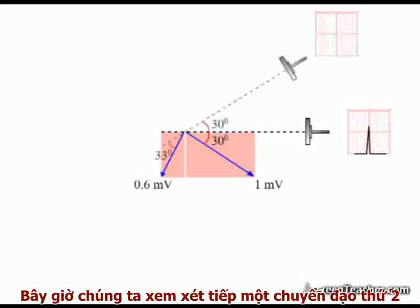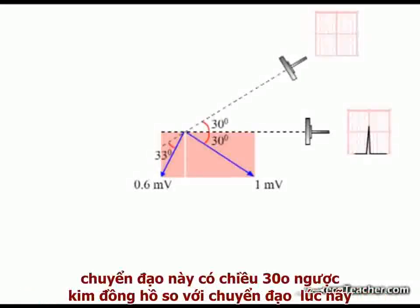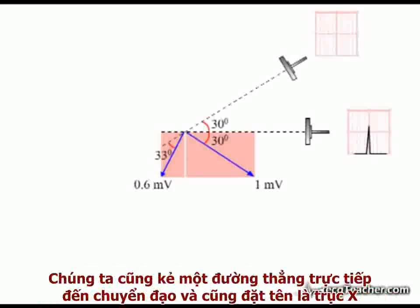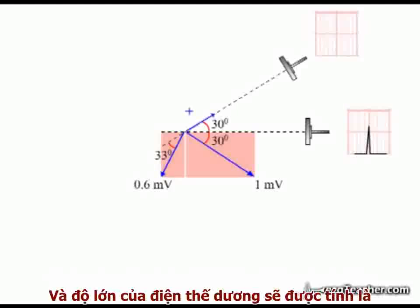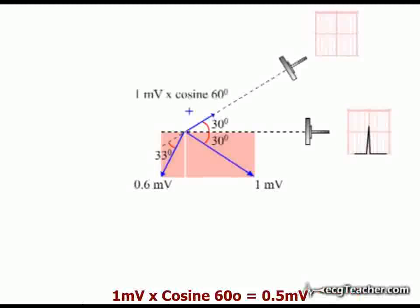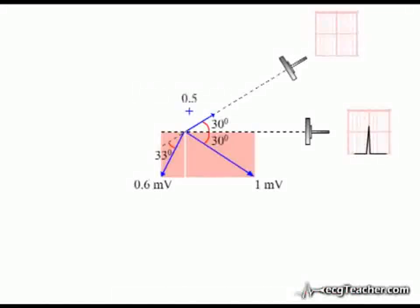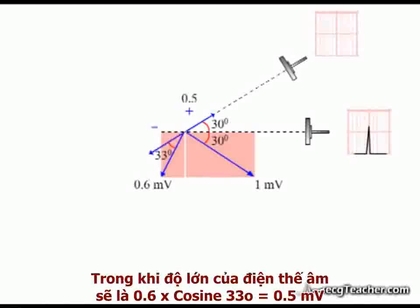Now consider a second lead sensing these events 30 degrees anticlockwise from lead A. We let the direct line to this lead define the x-axis. The magnitude of the positive signal is 1 millivolt multiplied by the cosine of 60 degrees, giving a value of 0.5 millivolts, while the negative signal is 0.6 multiplied by the cosine of 33 degrees, which also computes at 0.5 millivolts.